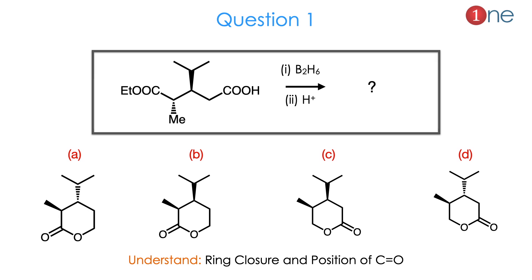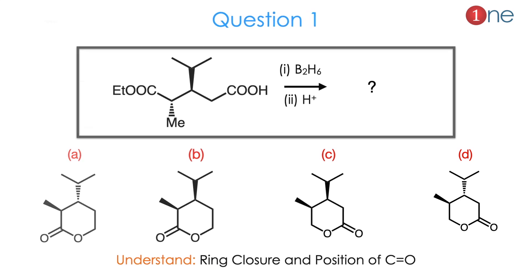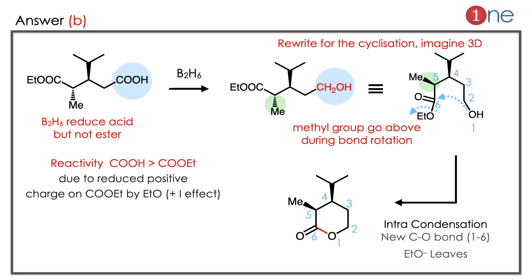Here you have to understand that ring closure occurs, and you also have to find the position of the C=O. The position of the C=O means which group is condensed. The answer is B. The starting material contains an acid and an ester; one methyl group is above and one isopropyl is below. B2H6 is a reducing agent — it will only reduce the acid, not the ester. B2H6 has selectivity. So a CH2OH group is formed.